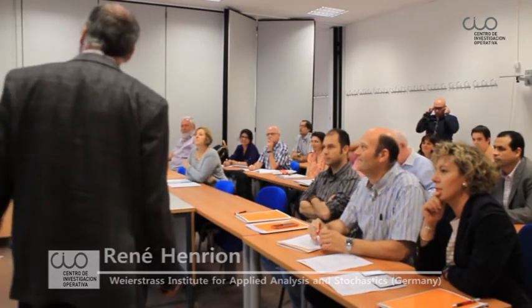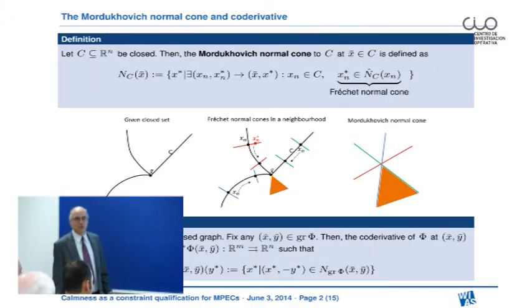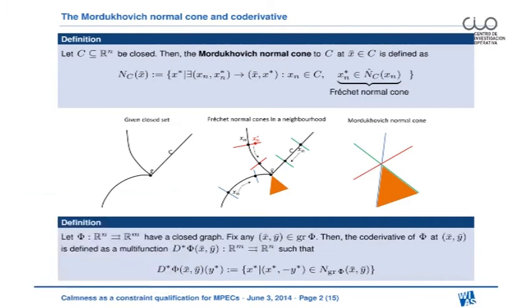This is a joint talk with my Czech colleague Jirji Otralta and Lukasz Adam from Prague, and it is on calmness as a constraint qualification for MPECs, which means mathematical programs with equilibrium constraints.